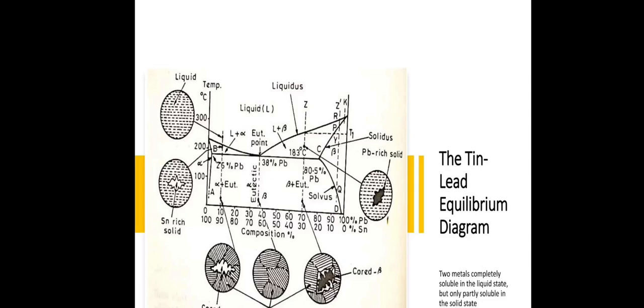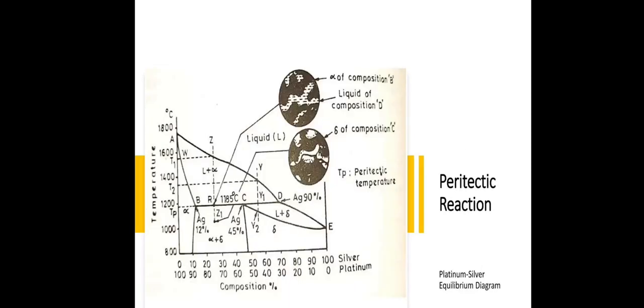Here, two metals completely soluble in liquid state but only partially soluble in solid state. In this picture, we can see an example of platinum-silver equilibrium diagram. Here silver keeps on increasing the percentage from 0 to 100, platinum from 100 to 0. Whenever temperature variations occur, the peritectic reactions give the results of different structure formations of gamma, alpha and delta reactions.